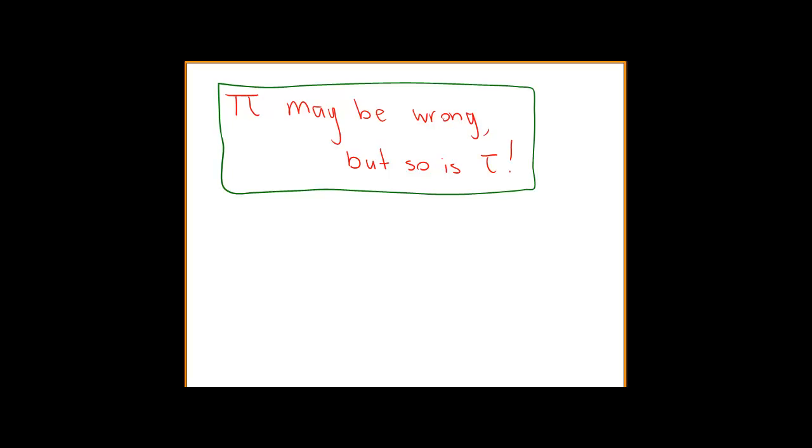I heard about a movement recently to do away with pi because it's wrong, and I was very excited because I've lived with the wrongness of pi for my whole life. But when I looked at what they wanted to replace pi with, I was sorely disappointed because it's still wrong. Here is my response to it: it's called pi may be wrong, but so is tau.